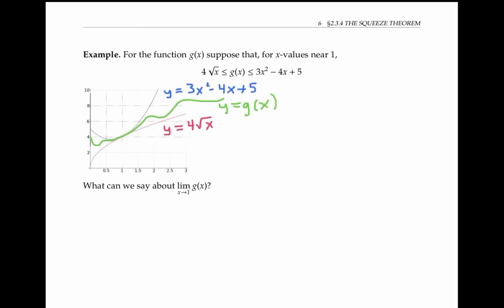Well, what can we say about the limit of g of x as x goes to one? Well, if you notice, the red curve and the blue curve have the exact same limit of four as x goes to one. And since the green curve is squeezed in between the red and the blue curve, its limit must also be four. This example is a special case of the squeeze theorem.